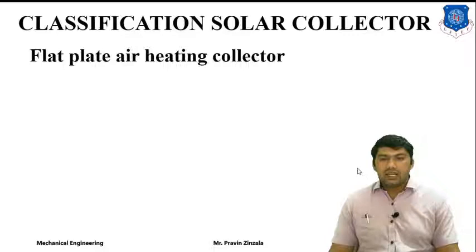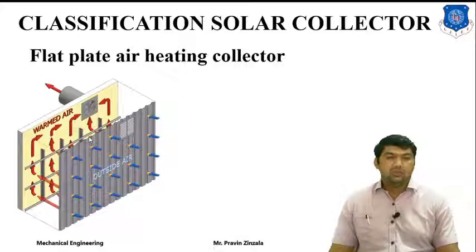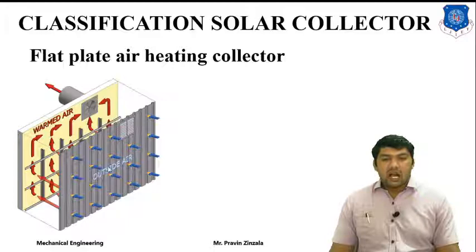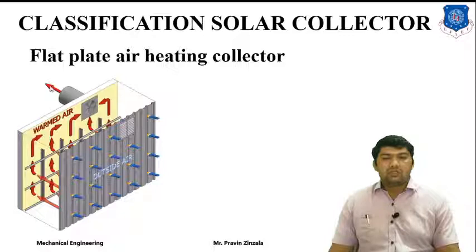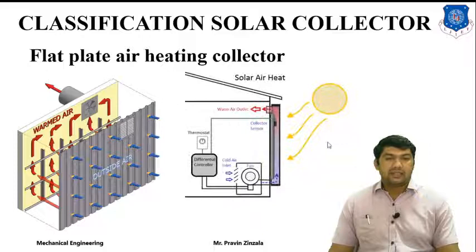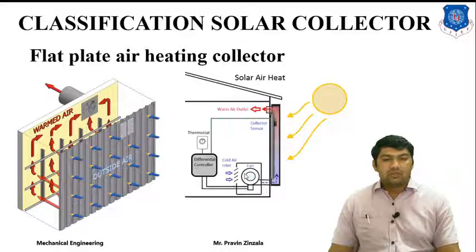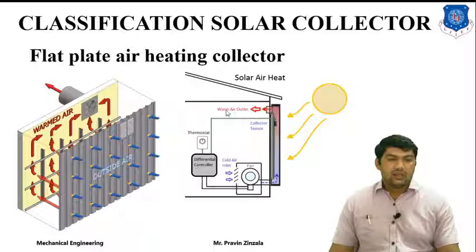Next is the flat plate air heating collector, which has the same construction as the flat plate collector but is used for space heating. Whenever solar radiation strikes the absorbing surface, it transmits heat to the air, and the warmed air is passed through for space heating. Similarly, we can place the flat plate collector on south-facing surfaces, where radiation warms the air. Using a fan or compressor, cold air is supplied and hot air is obtained, which can also be used in chemical or industrial processes for space heating.